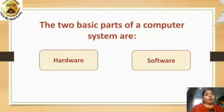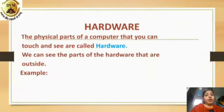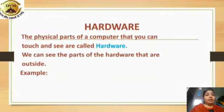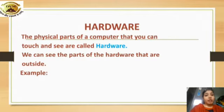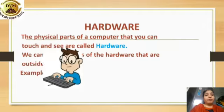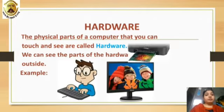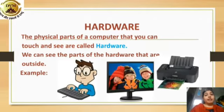The two basic parts of a computer system are Hardware and Software. The physical parts of a computer that you can touch and see are called Hardware. We can see the parts of the Hardware that are outside. Examples include Keyboard, Monitor, and Printer.